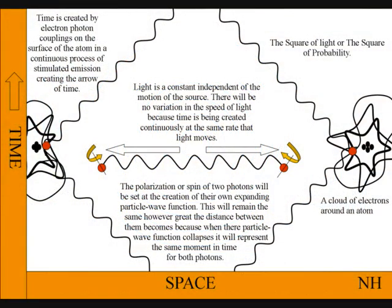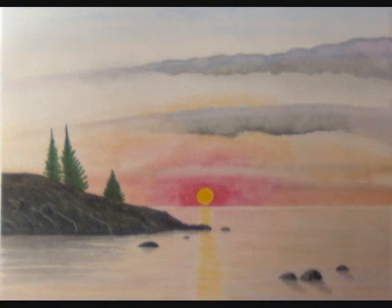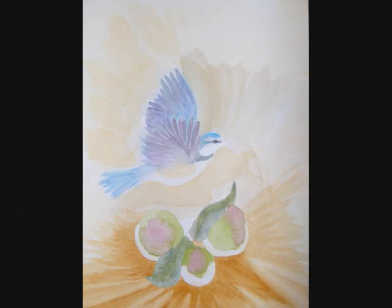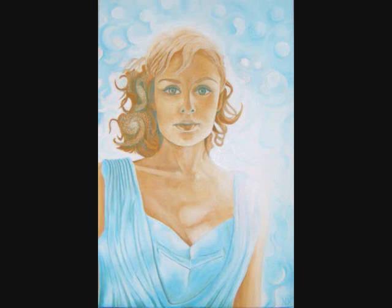Because each atom is creating its own space-time, at the same rate that light moves, the expansion of light between the atoms will always be a universal constant, independent of the motion of the source. This can also explain why light is so beautiful when it strikes an object. It is because we are looking at a moment of pure creation, of time and space.